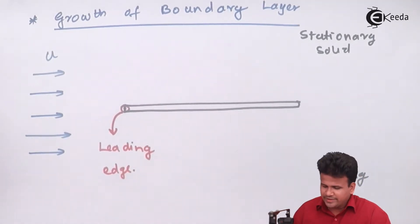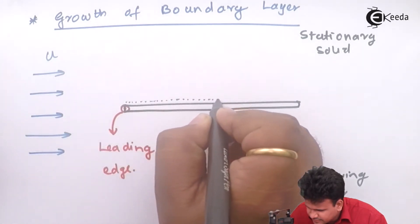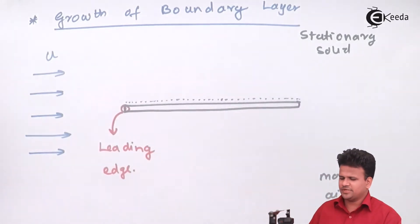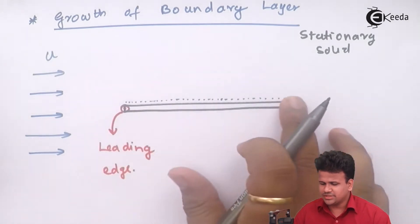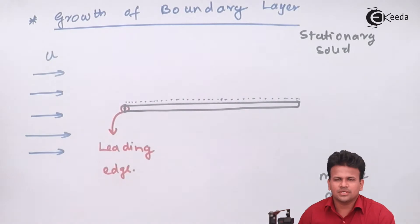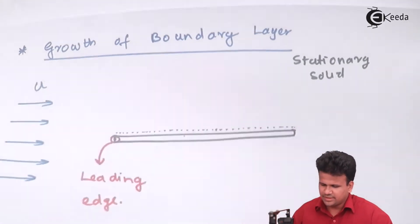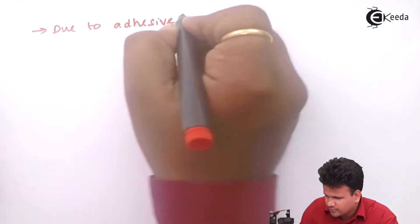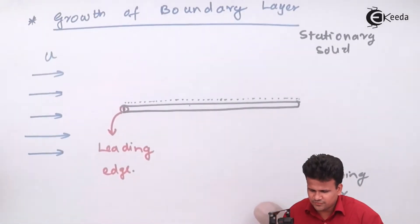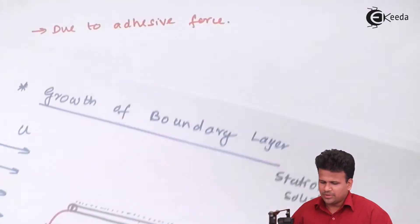The leading edge is the point from where the entire boundary layer will start to grow. There is a very minute thickness near the layer of the solid surface. Due to the adhesive force between the fluid and the solid, the velocity of the fluid just near the vicinity of the solid will have the same velocity as that of the solid.